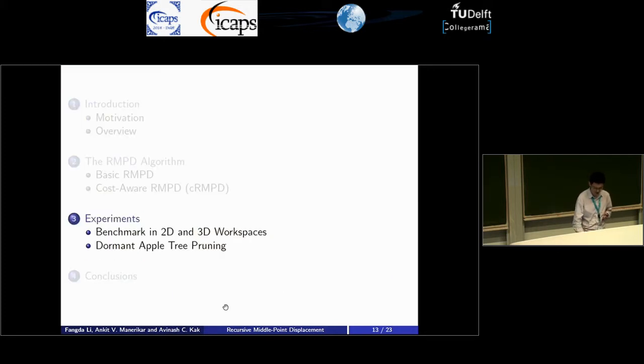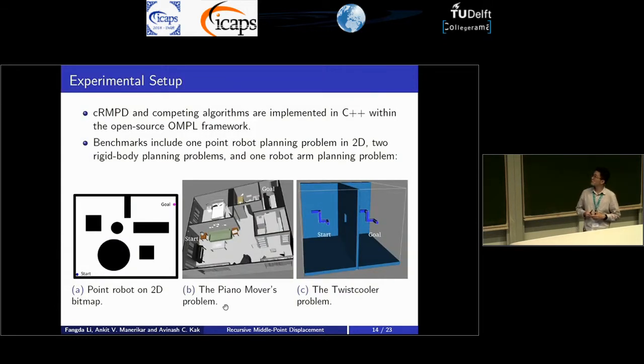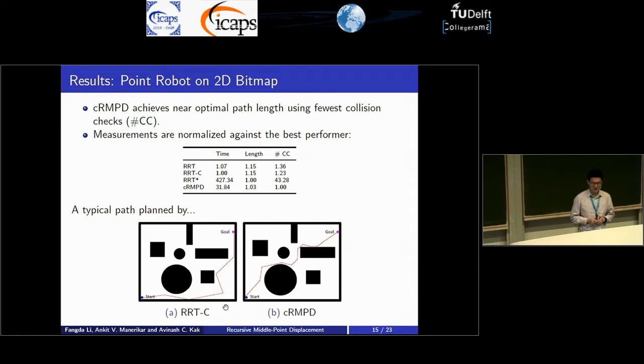CRMPD and competing algorithms are implemented in C++. We have used four benchmarks. First is a very simple bitmap benchmark, and then we have two rigid body motion planning problems, and then a pruning simulation. To start things off, let's look at this very simple bitmap planning problem. The results, which is normalized by the best performer here, shows that CRMPD was able to achieve optimal path length that's close to RRT star using the fewest collision checks.